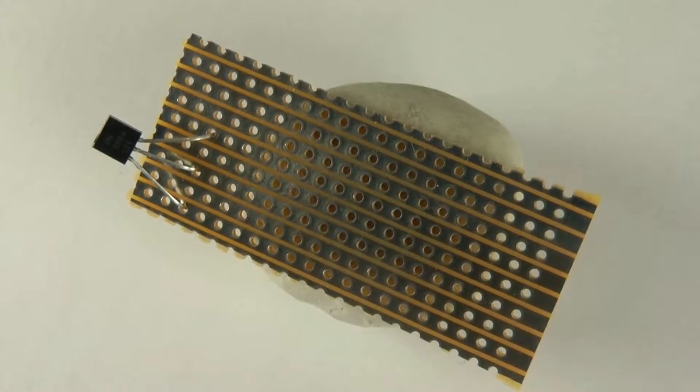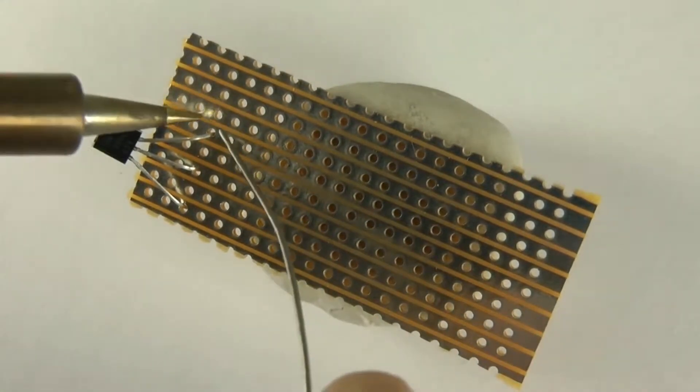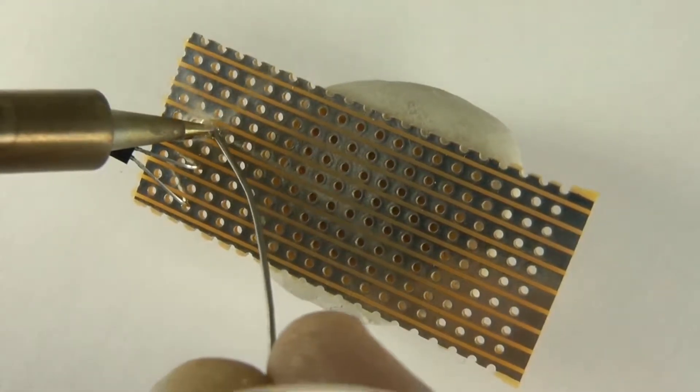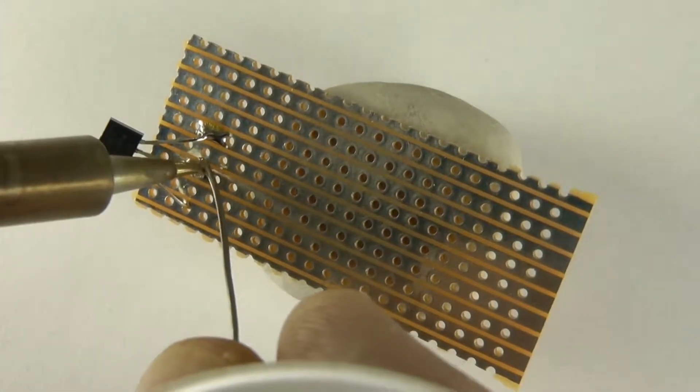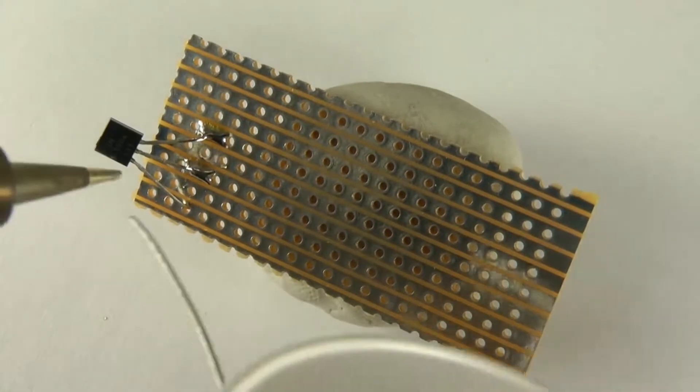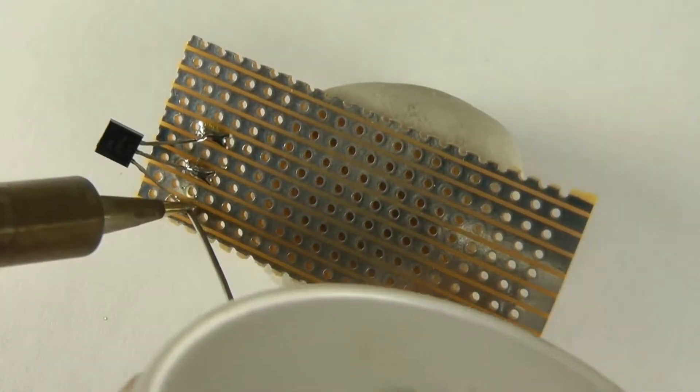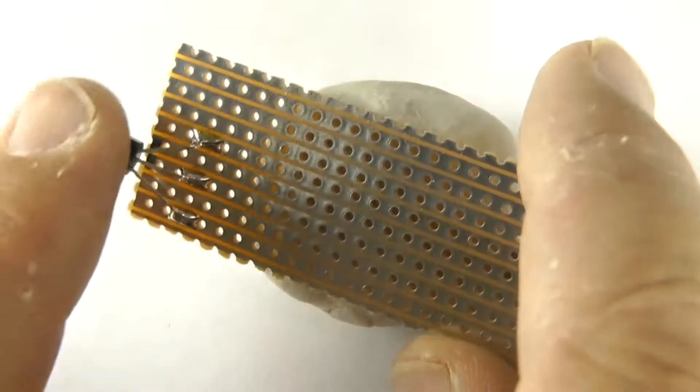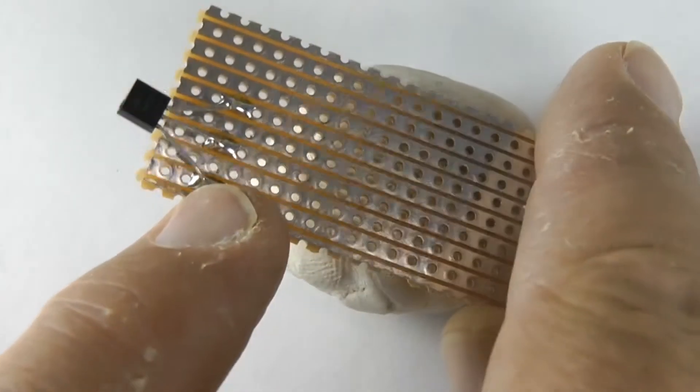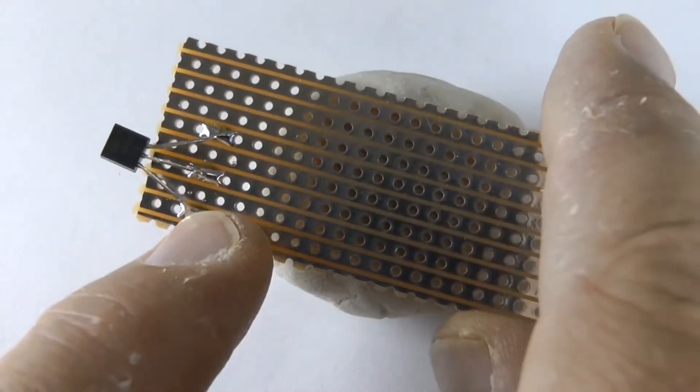So every time you pick up the soldering iron give the tip a little wipe, because if your soldering iron isn't clean, you're going to make a terrible mess on your board. So what I'm doing here, I'm just soldering that transistor in place. You'll notice that I've soldered on the top side of this Vero board, which is an unconventional way to work.